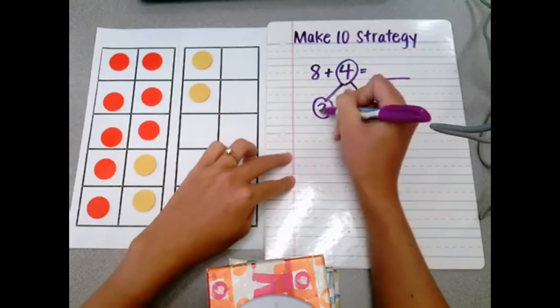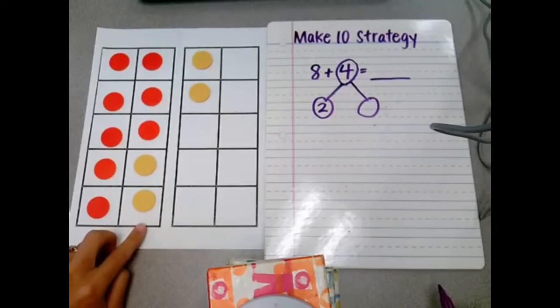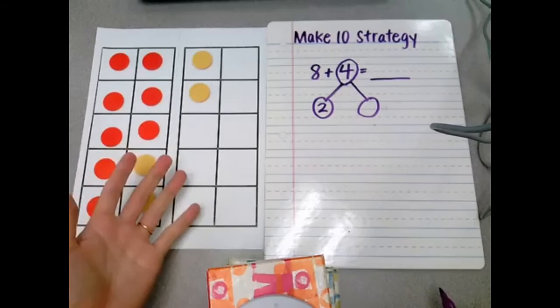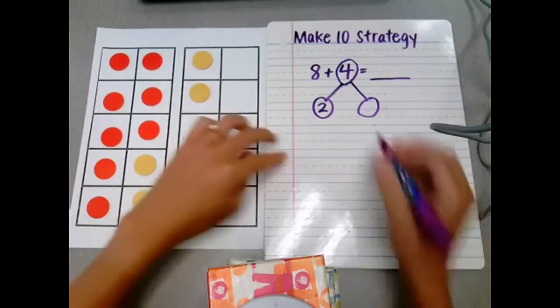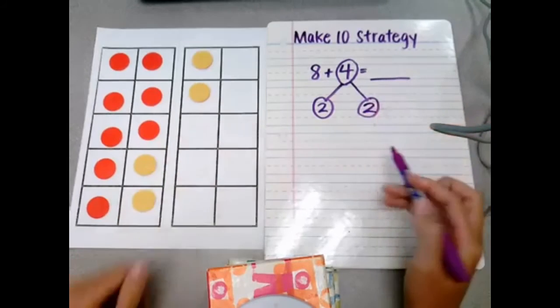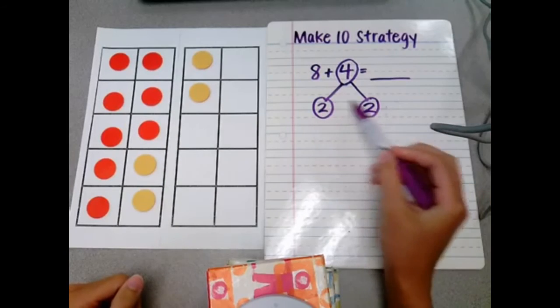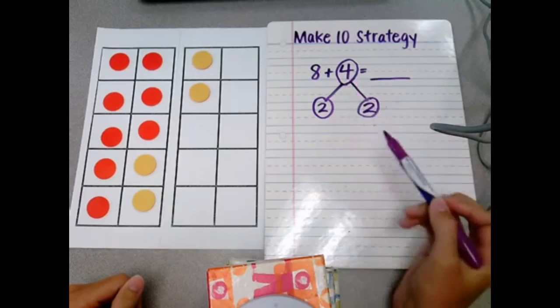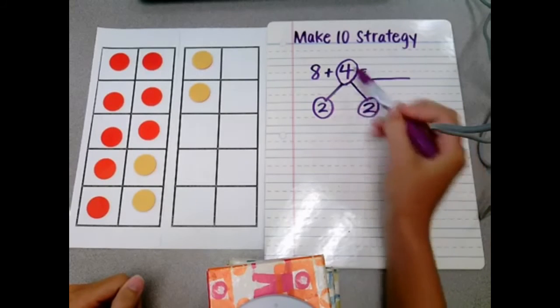The first part of the bond, then, is 2, where these 2 came over to make the complete 10 frame. Then I ask the kids, what do we have left over? Well, we have the 2 left over. In this situation, we see that 2 plus 2 would equal 4. This is called a fact family or number bond.